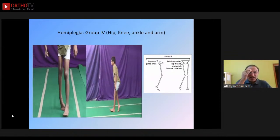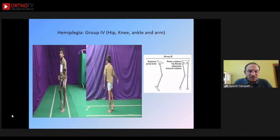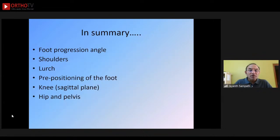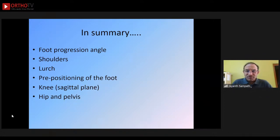In summary, when watching a child walk: first look at the foot progression angle — is it neutral, out-toeing, or in-toeing? Look at the shoulders for any shoulder dip indicating leg length discrepancy. Any lurch indicates insufficiency of hip abductors or hip extensors. Look at pre-positioning of the foot, the knee in the sagittal plane, and the hip and pelvis. By systematically looking at the child walking, we can classify the exact gait pattern in hemiplegia and diplegia and guide further management.